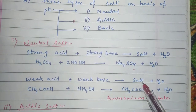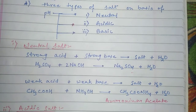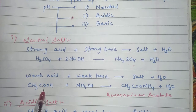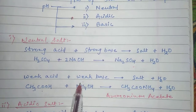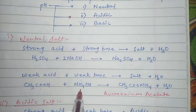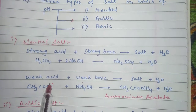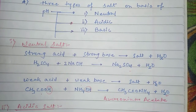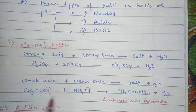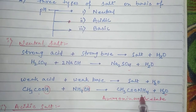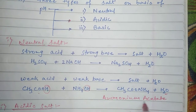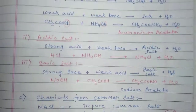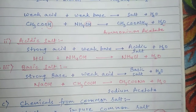An example of a weak acid is acetic acid, and the weak base is ammonium hydroxide. The hydrogen ions react with each other and form water. The remaining parts of the acid and base form the salt, which is ammonium acetate. So ammonium acetate is a neutral salt.